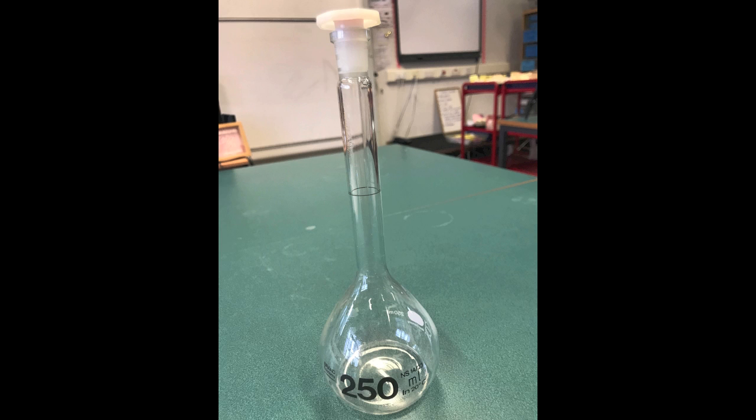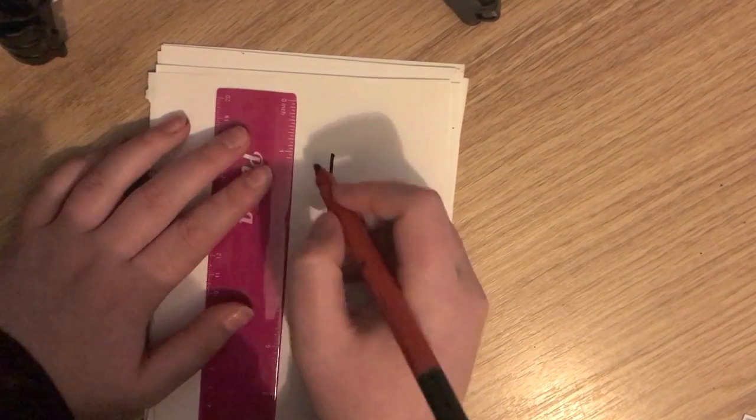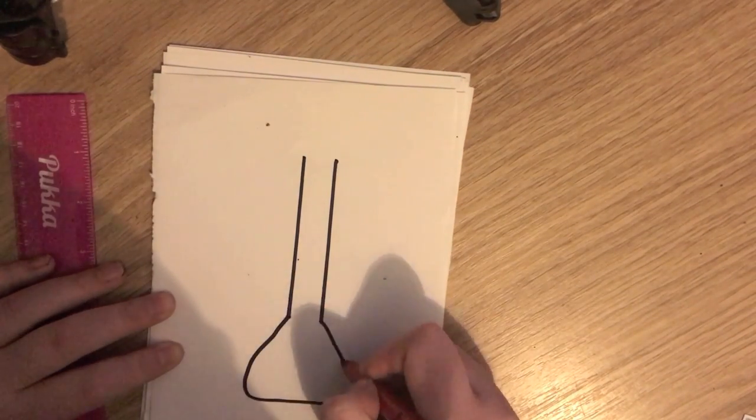Standard or volumetric flasks can only measure one volume of liquid and are used to make standard solutions, those with a known concentration. The volume of the flask is shown by the graduated line on the neck.